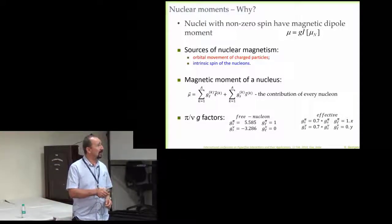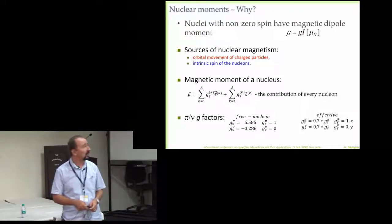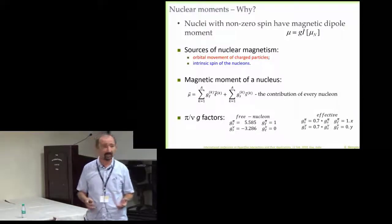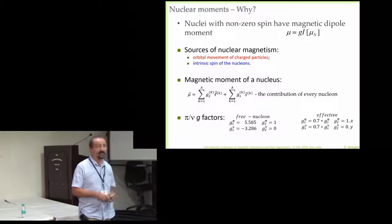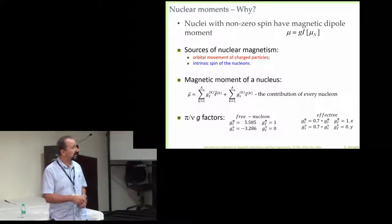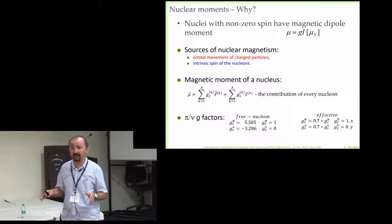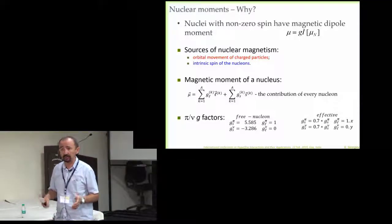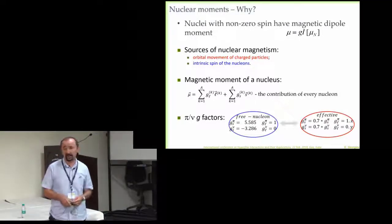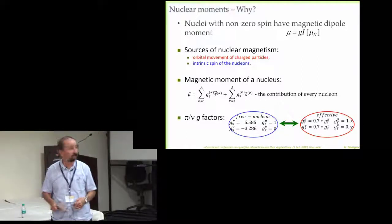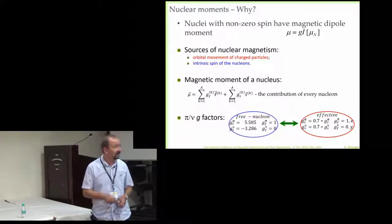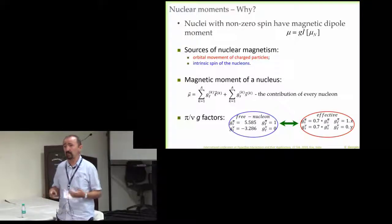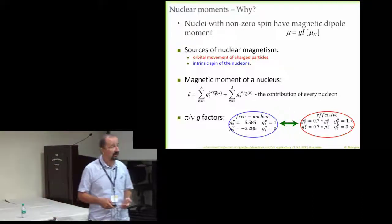The question is nuclear moments - why? We can measure them, but what we can get out of them. We know what the nuclear moment is, what are the sources of nuclear magnetism: orbital movement or intrinsic spin of the nucleus. Each nucleon contributes to the total magnetic moment of the nucleus, and protons and neutrons have considerably different G factors. Without any interactions, their signs are different, their values are quite different. You're not supposed to have any orbital contribution from the neutrons. But what you measure in reality are these effective G factors. The spin G factors are reduced by a certain value, and the orbital G factors are also modified. What we get out of this is nuclear structure information, and this is what we're interested in - to get information on the underlying wave function.